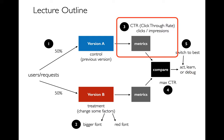That's all based on a comparison, and we saw one way that we can do the comparison — we could just see what has the max click-through rate and go with that. We also saw more statistically meaningful ways to do it. We could say: stay with version A unless there's statistical evidence that B is significantly better.